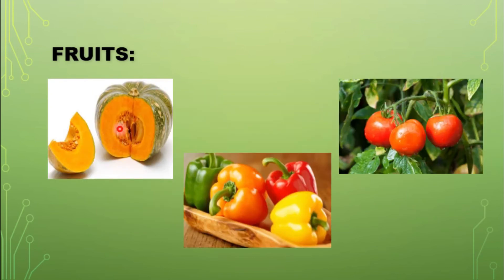Pumpkin and tomato are some examples of fruits that we use as vegetables. Students, pumpkin and tomato are actually fruits, but we use these fruits as vegetables.